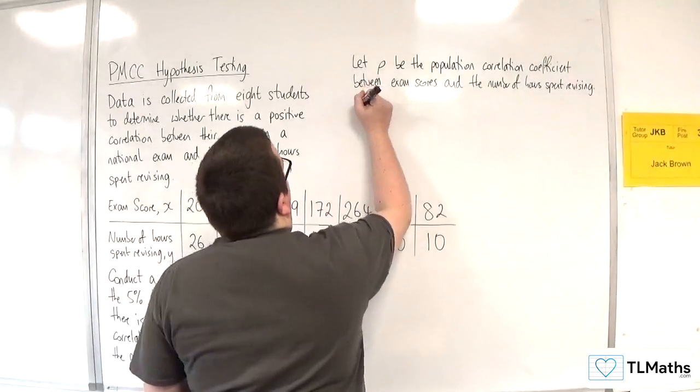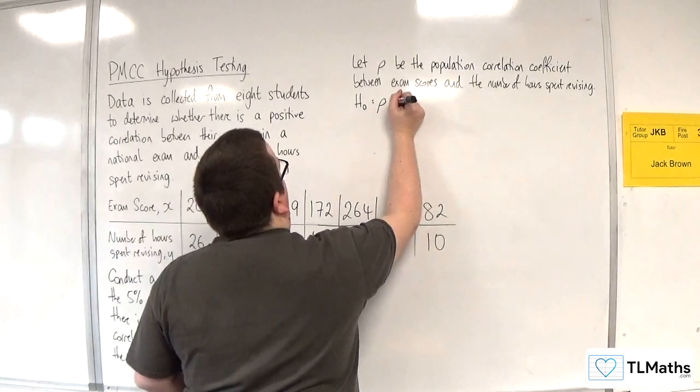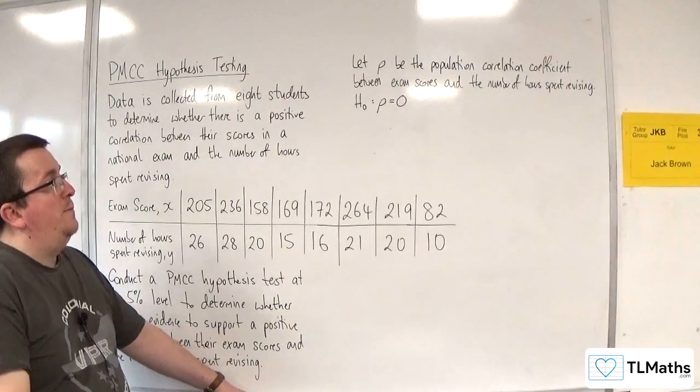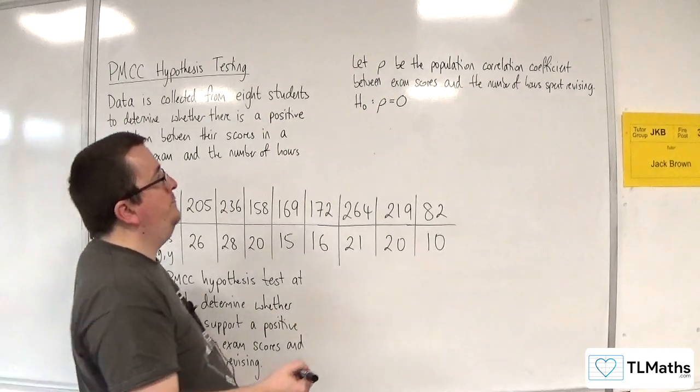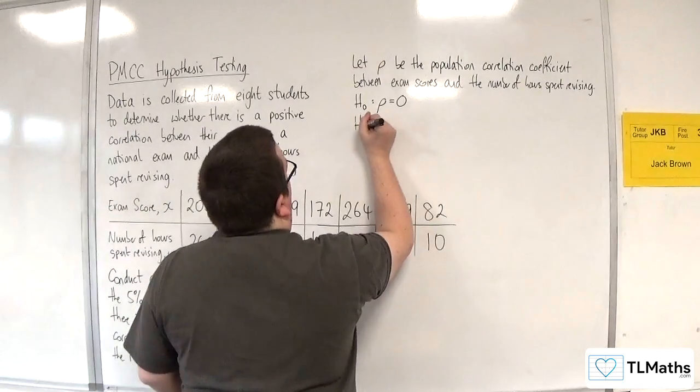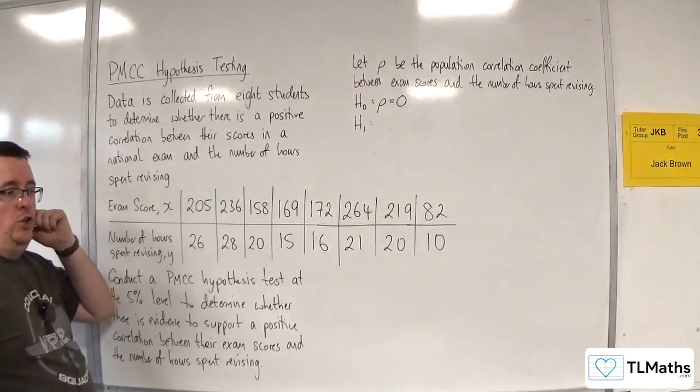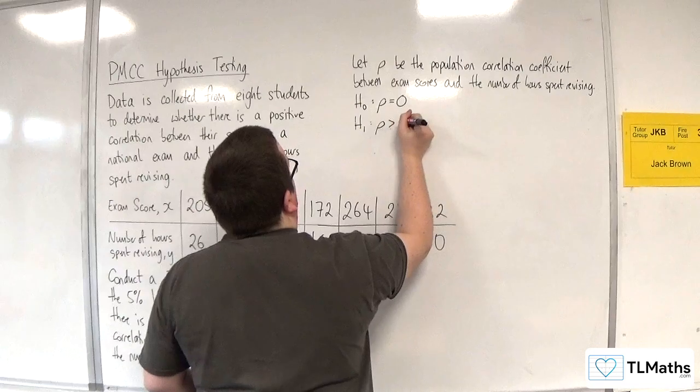Then we have the null hypothesis, H0, which is always the same for our hypothesis test, and it's rho is equal to 0. So we assume that there is no correlation in the parent population. Then the alternative hypothesis, where we are trying to tell whether there is a positive correlation. That's what we're testing. So that must be rho is greater than 0.